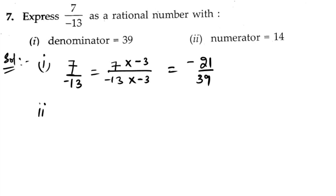Second bit. Here the numerator we want, we want it to be 14. For that, let us write down 7 by minus 13. In seventh table, we know that 7 twos are 14.